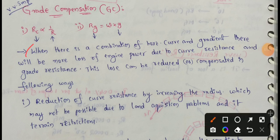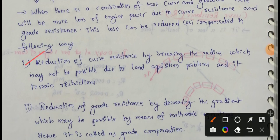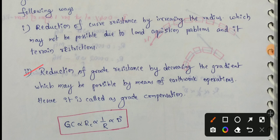When there is a combination of a horizontal curve and a gradient, there will be more loss of engine power due to curve resistance and grade resistance. This loss can be reduced or compensated in two ways: first, by reduction of curve resistance through increasing the radius — though this may not be possible due to land acquisition problems and terrain; second, by reduction of grade resistance by decreasing the gradient, which may be possible by means of earthwork operations. Hence this is called grade compensation.